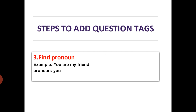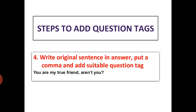Step number three: find the pronoun. A pronoun is a word which is used instead of a noun in a sentence. In our sentence 'You are my friend,' the pronoun is 'you.' After applying these three steps, the last step is writing the answer. While writing the answer, we need to write the original sentence first, then put a comma and add the suitable question tag.